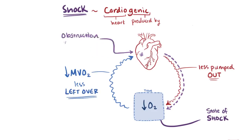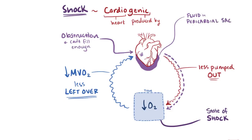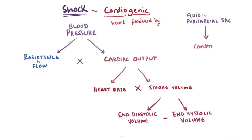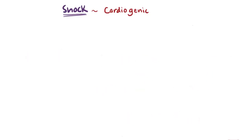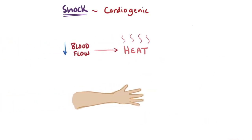Sometimes there might be an obstruction that doesn't allow the heart to fill properly with blood. For example, the pericardial sac might fill up with fluid from an infection, or blood from a traumatic accident like getting stabbed in the chest. If this sac fills up, it physically constricts the heart from expanding and contracting normally and also reduces stroke volume. This is sometimes subclassified as obstructive shock, but the cause is still due to the heart's inability to do its job. Similarly to hypovolemic shock, a reduction in cardiac output leads to lowered blood flow, so the skin gets cool and clammy, and cardiogenic shock is also considered a cold shock.